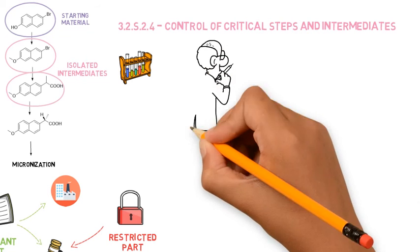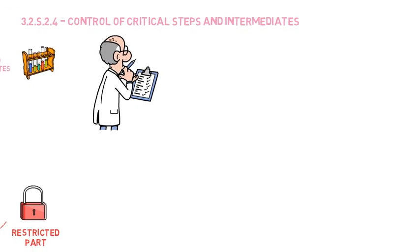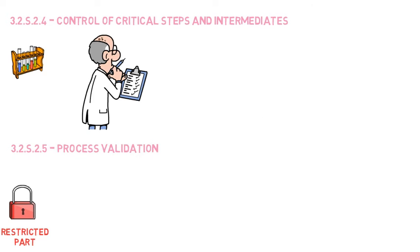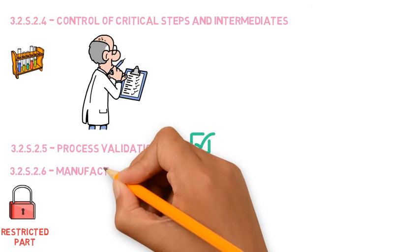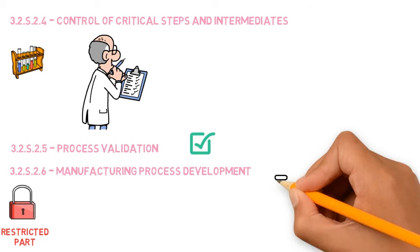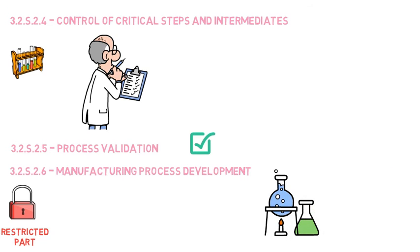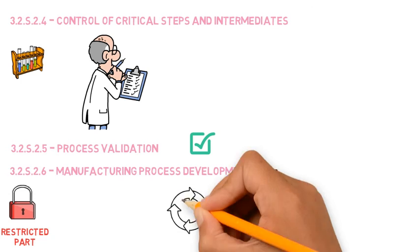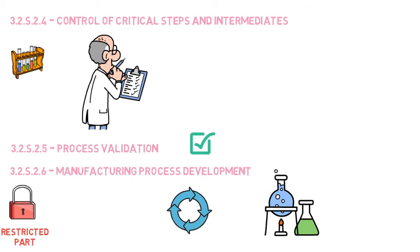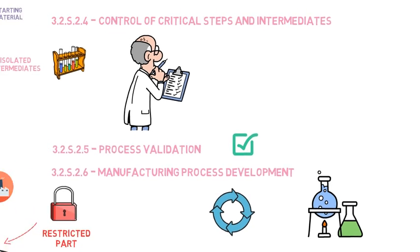A section about the process validation, and a section about the development of the process, which will be mainly applicable if the API is a new chemical entity, but it can also include information about process optimizations and changes in the route of synthesis which were done throughout the years.